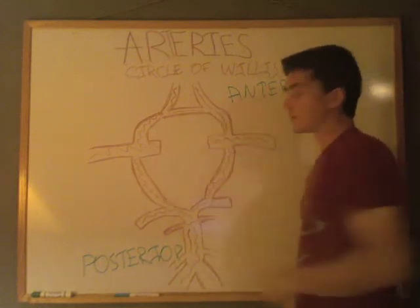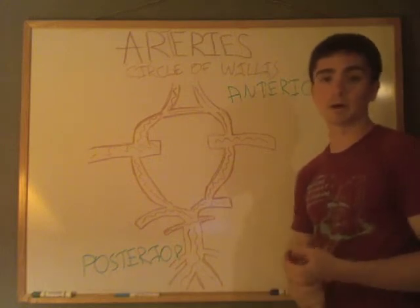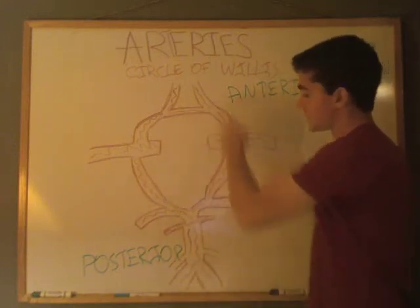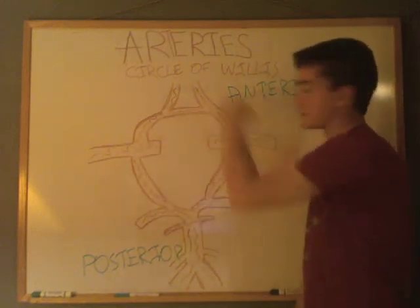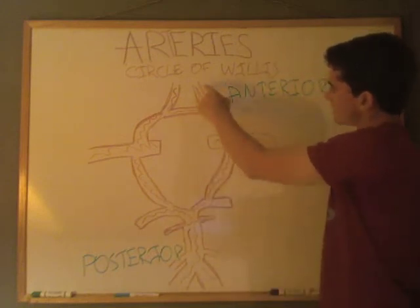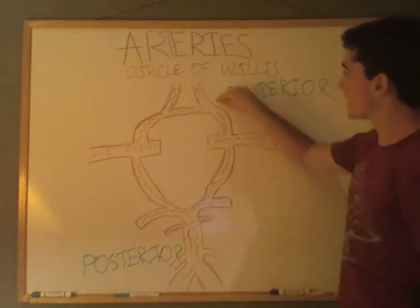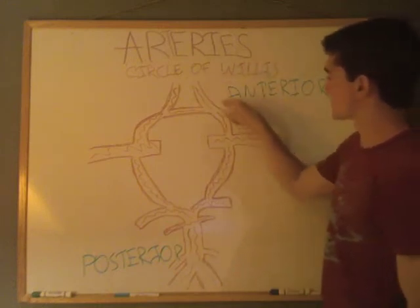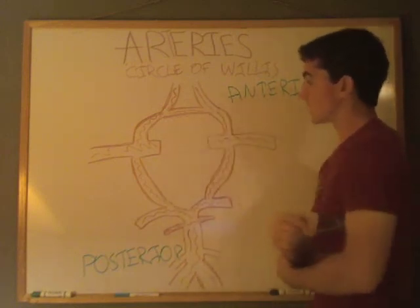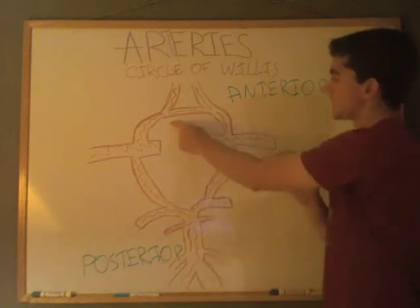The two structures in the middle here are the internal carotid arteries — we talked about those earlier in this video. The internal carotid arteries come in and join as part of the circle of Willis. Coming out from those going toward the front of the brain are the anterior cerebral arteries, which both go towards the front of the cerebrum. And then the structure connecting the two is called the anterior communicating artery.